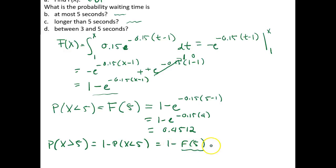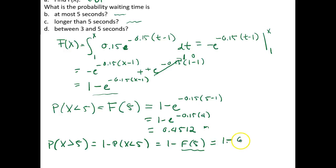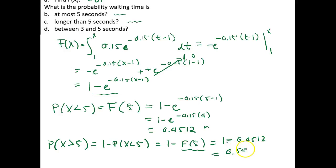Since we already calculated F(5) in the previous problem, finding this complement is straightforward: 1 minus 0.4512, which equals 0.5488.